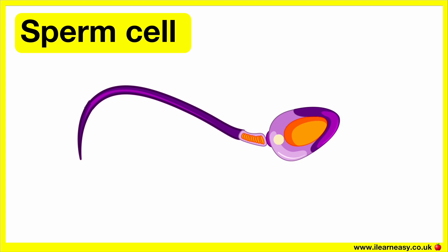The sperm cell is small and long. It passes on its nucleus to the egg in order to fertilise it. It contains 23 chromosomes. On average, a male releases millions of sperm, which increases the chances of fertilisation.